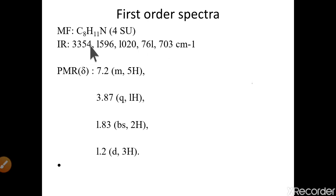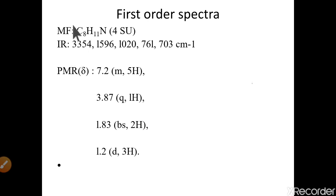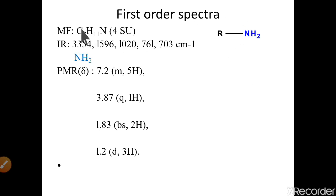Now let's look at the IR data. We have IR peaks at around 3300, 1600, 1000, 760, and 703. Since our formula contains nitrogen, the peak around 3300–3400 clearly indicates the presence of an amine. The NH2 group is likely present. From the IR we conclude there is an NH2 group.